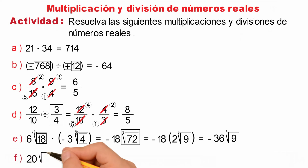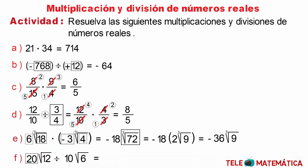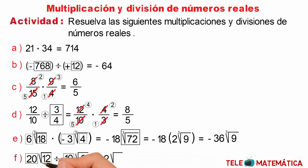As the last literal: 20√12 divided by 10√6. Since the indices of the radicals are equal, we can proceed to solve by dividing the coefficients — that would be 2 — then keep the radical and divide the sub-radicals — that would be √2. Since this number is irrational, we cannot simplify it further, so this would be the final result: 2√2.